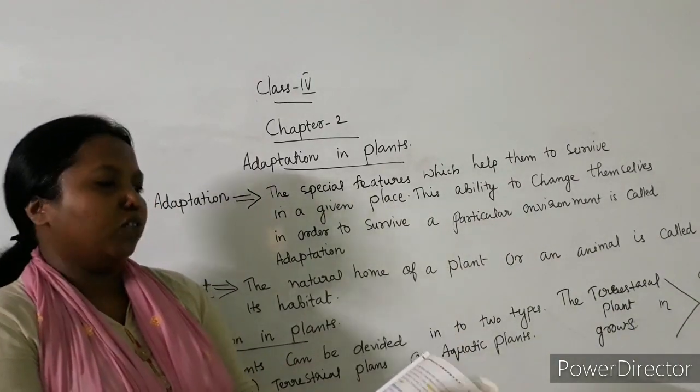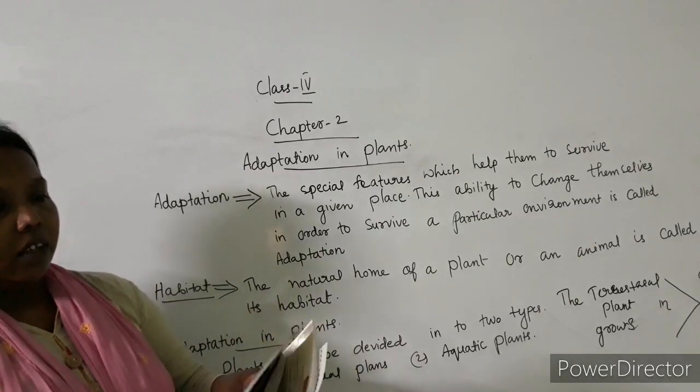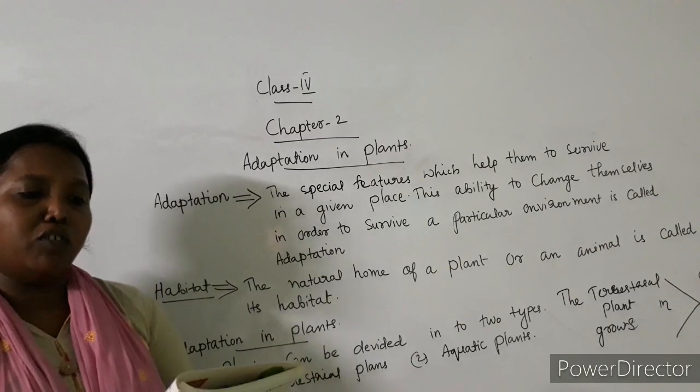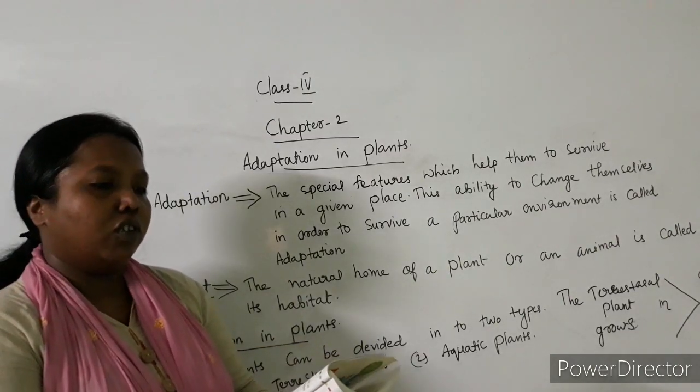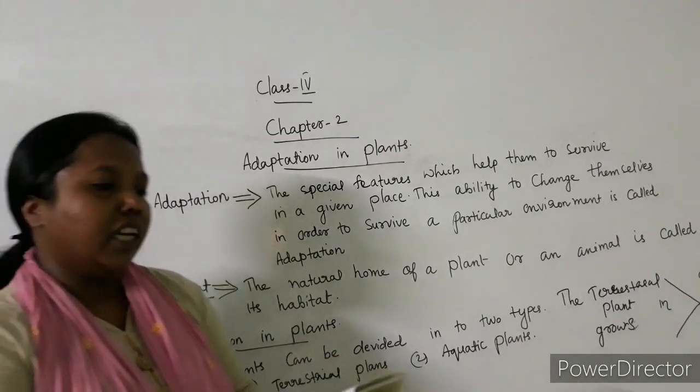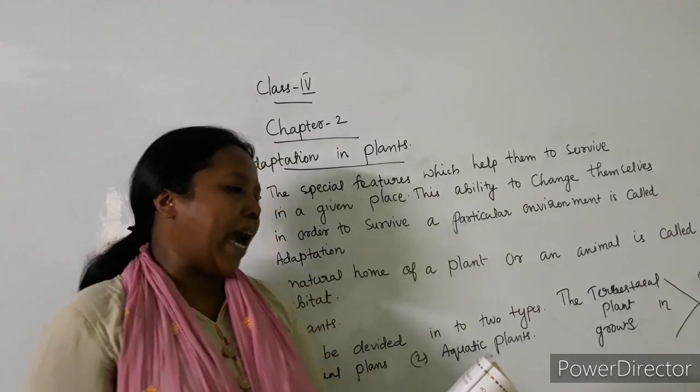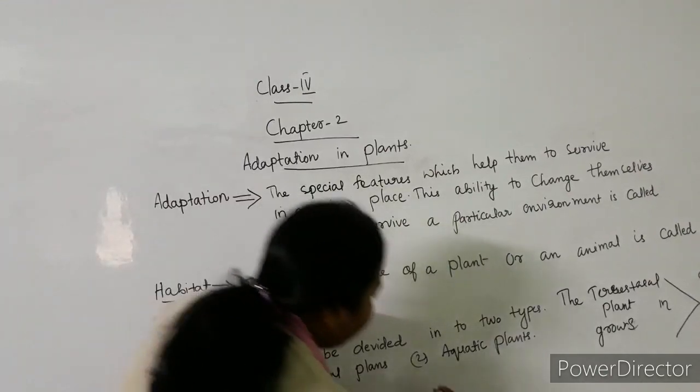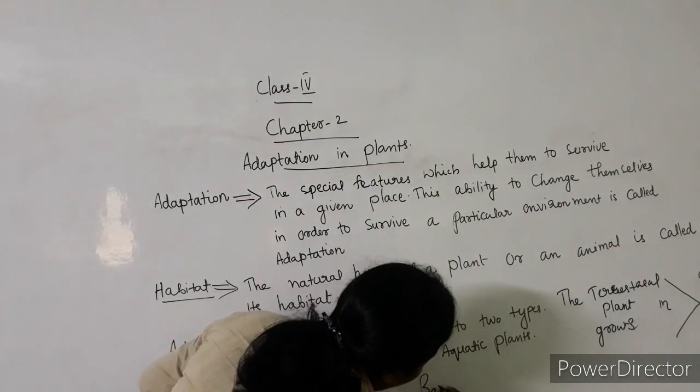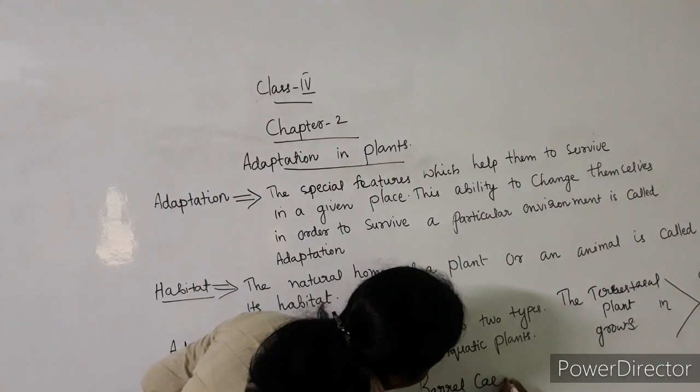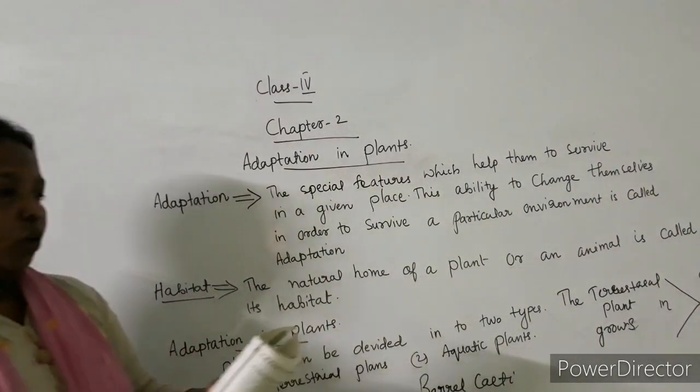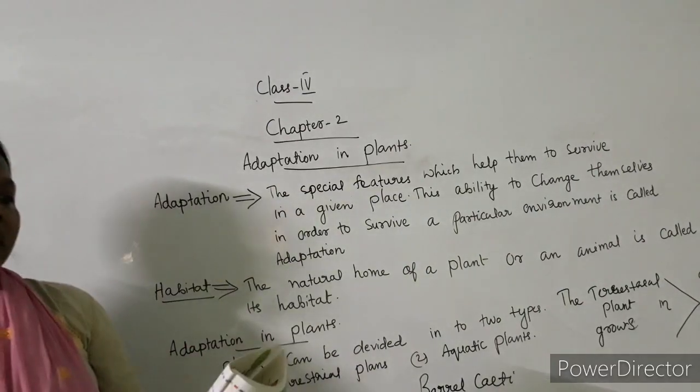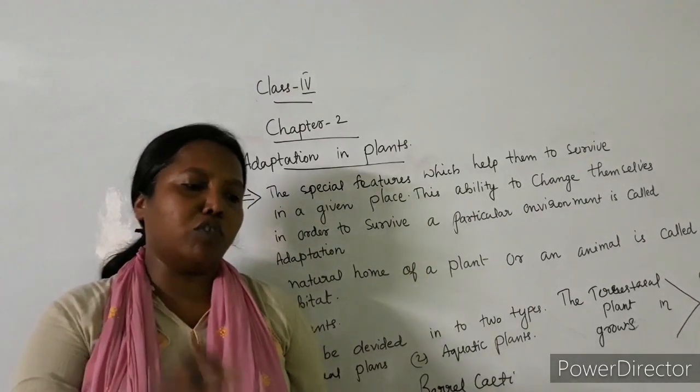Next, desert plants need to store water. Some desert plants such as barrel cacti have thick stems so that they store water.